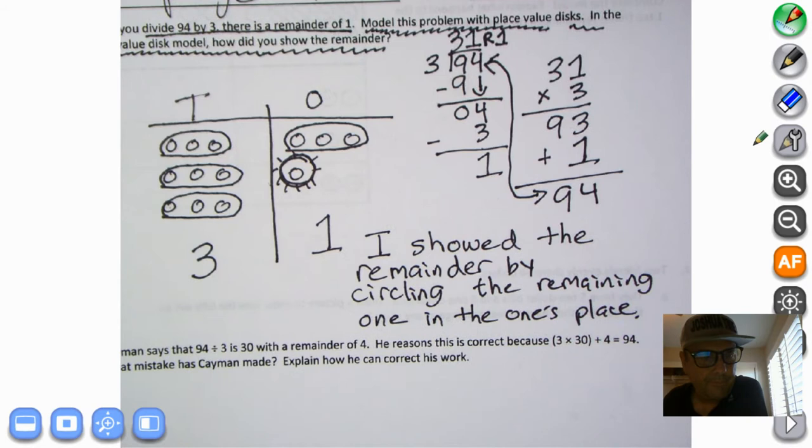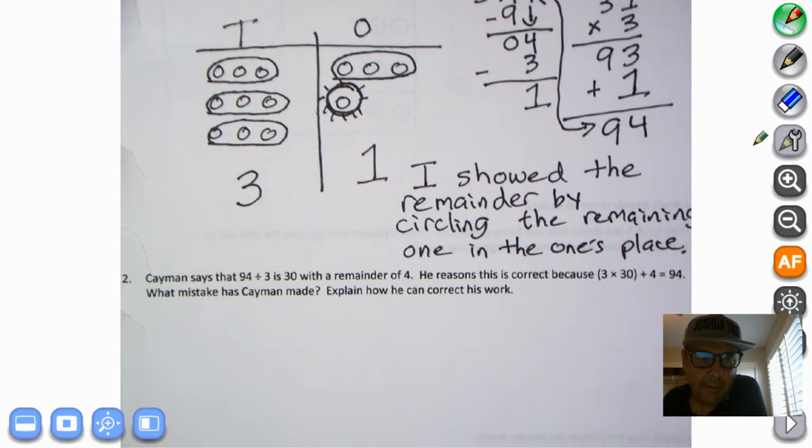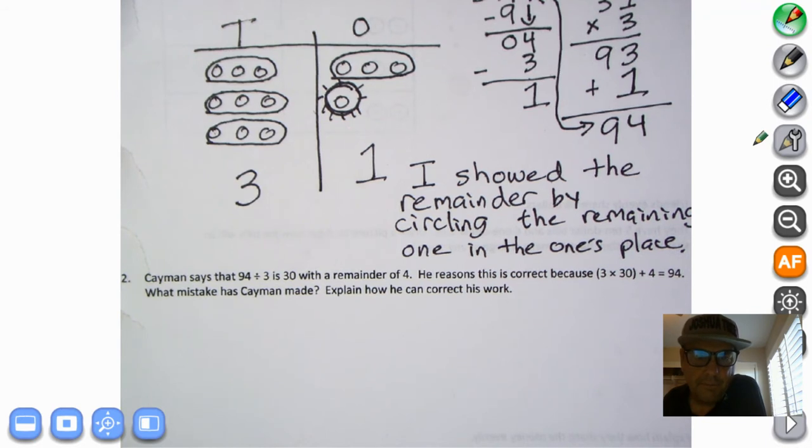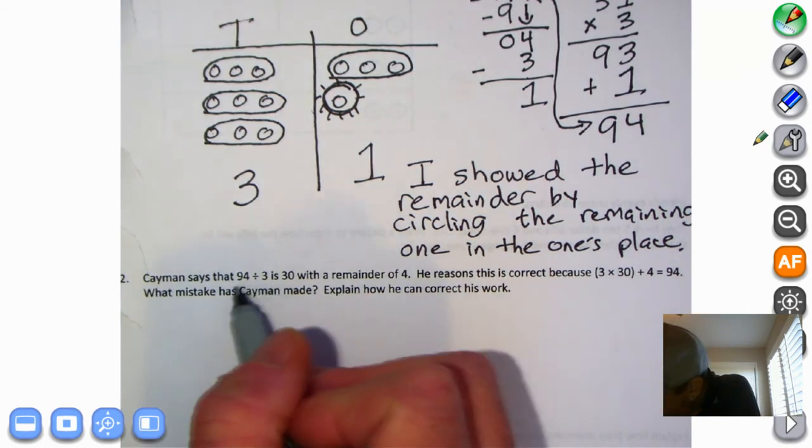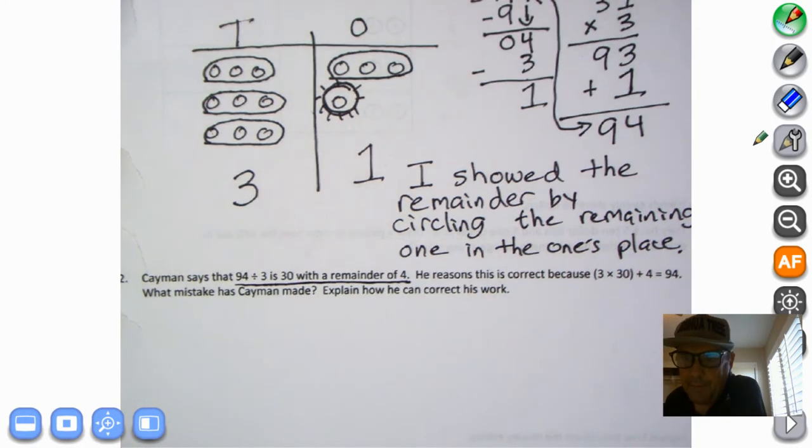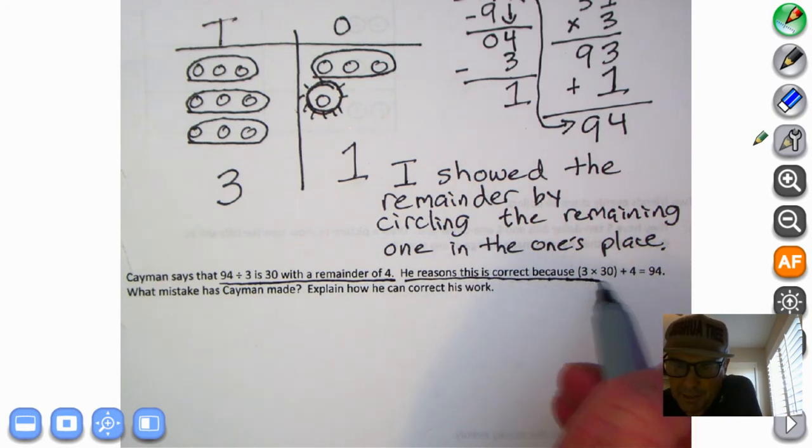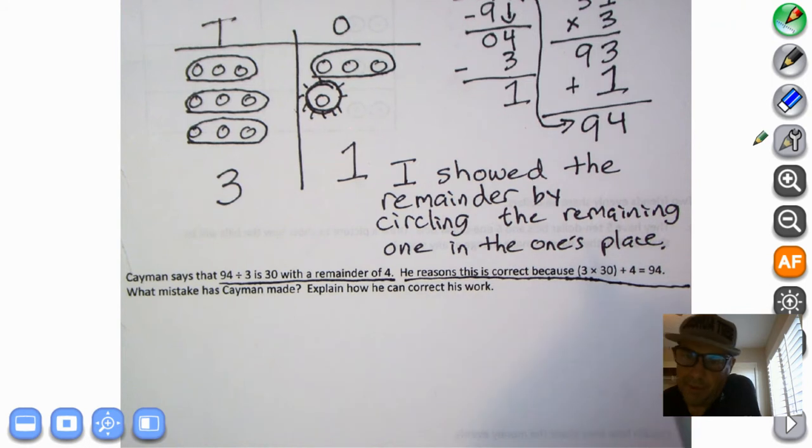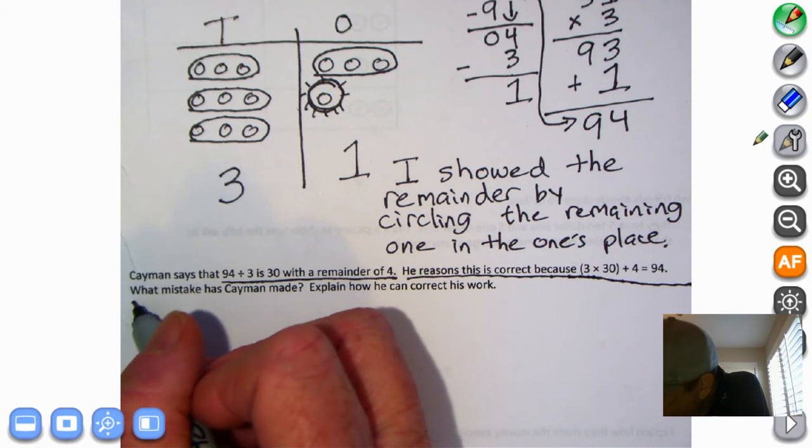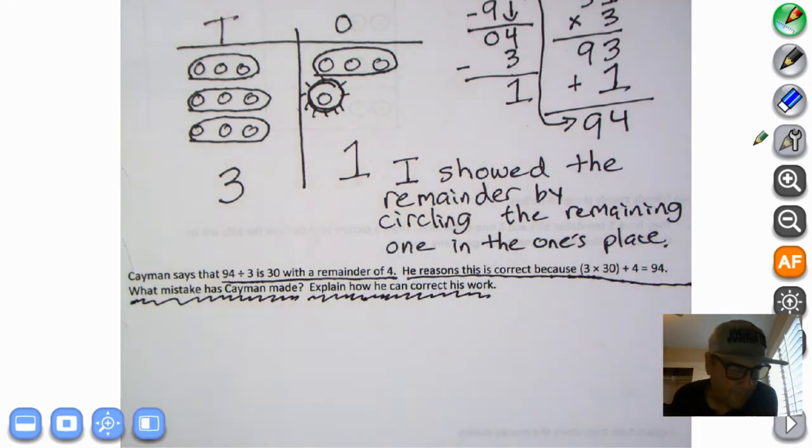All right, let's go ahead and continue on to number 2. It says Cayman says that 94 divided by 3 is 30 with a remainder of 4. This is what this character Cayman is saying. We've already proven that wrong. He reasons this is correct because 3 times 30 plus 4 equals 94. That's correct, 3 times 30 plus 4 is 94.